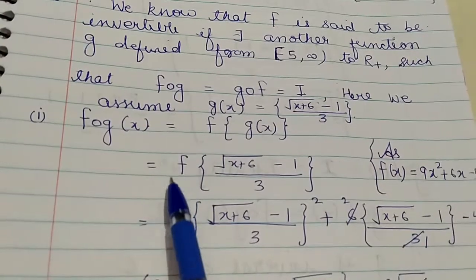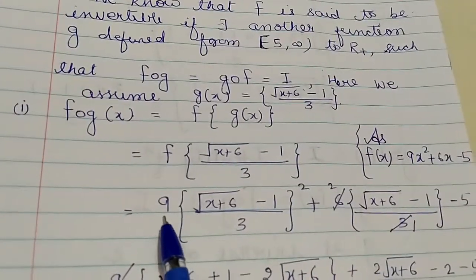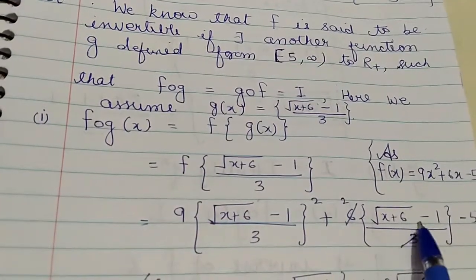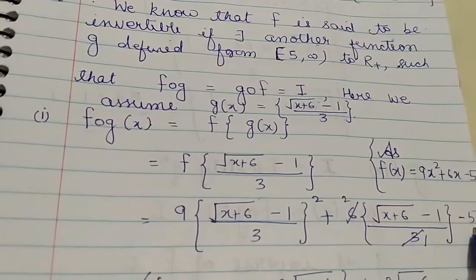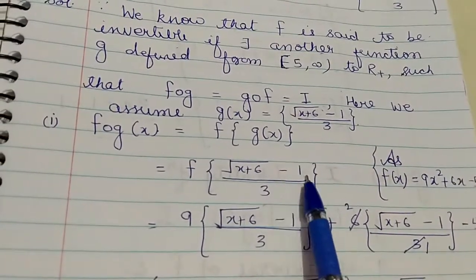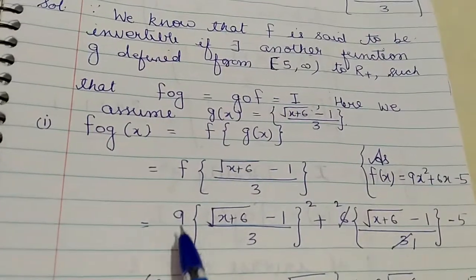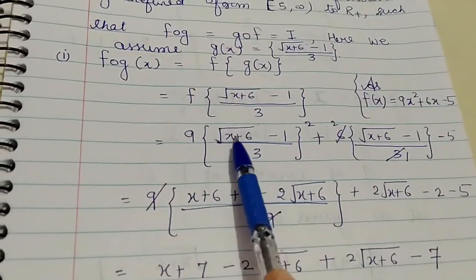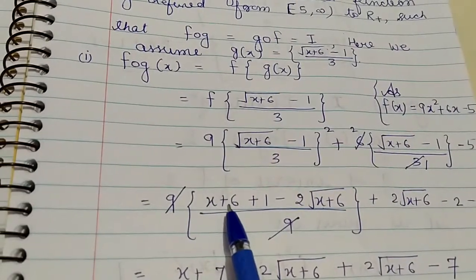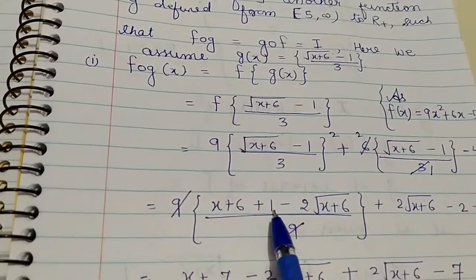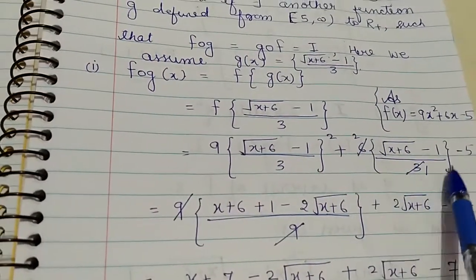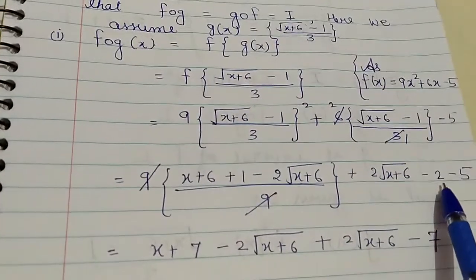The expression becomes 9·((√(x+6) - 1) / 3)² + 6·((√(x+6) - 1) / 3) - 5. Expanding using the algebraic identity (a - b)² = a² - 2ab + b², the squared term gives (x+6) - 2√(x+6) + 1, divided by 9. Multiplying through by 9 and combining with the remaining terms, the expression simplifies.